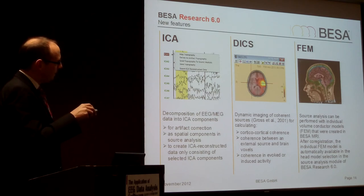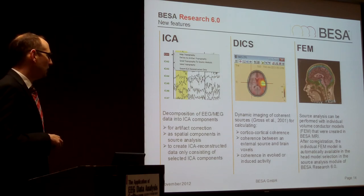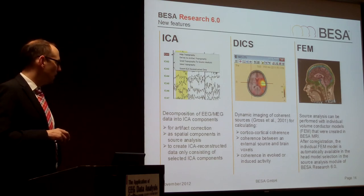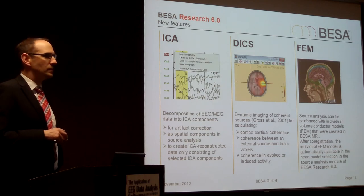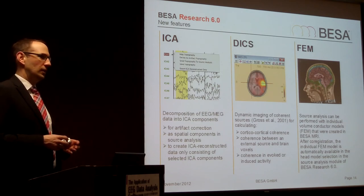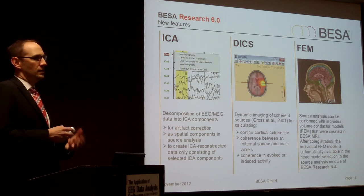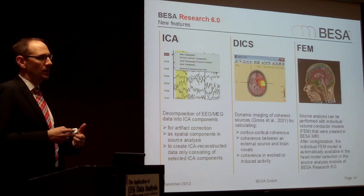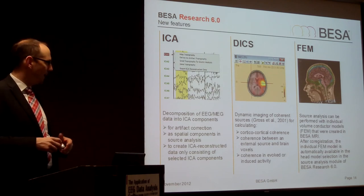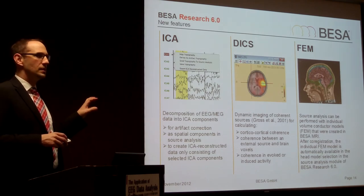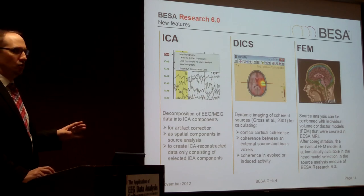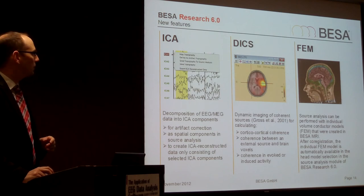Finally, a very important new feature is FEM modeling — Finite Element Modeling. This was developed in cooperation with the University of Münster in Germany. It is a very robust model for defining your individual anatomy. You make a FEM model from the anatomy, and it is a four-compartment model: scalp, skull, CSF, and brain. Each compartment has a different conductivity, and because of these different conductivities, the signal you expect on the skull changes accordingly.